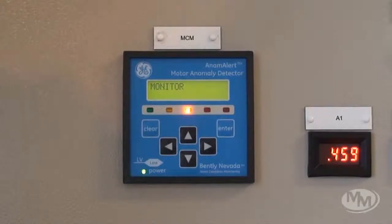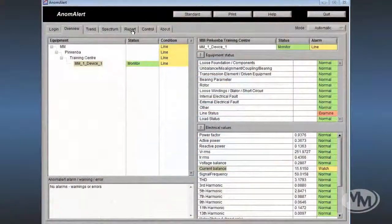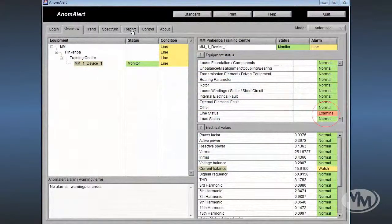Here we can see the Anomalert unit is now indicating an alarm. This is due to the previously introduced fault having met the Anomalert persistence criteria and being elevated to an alarm condition.